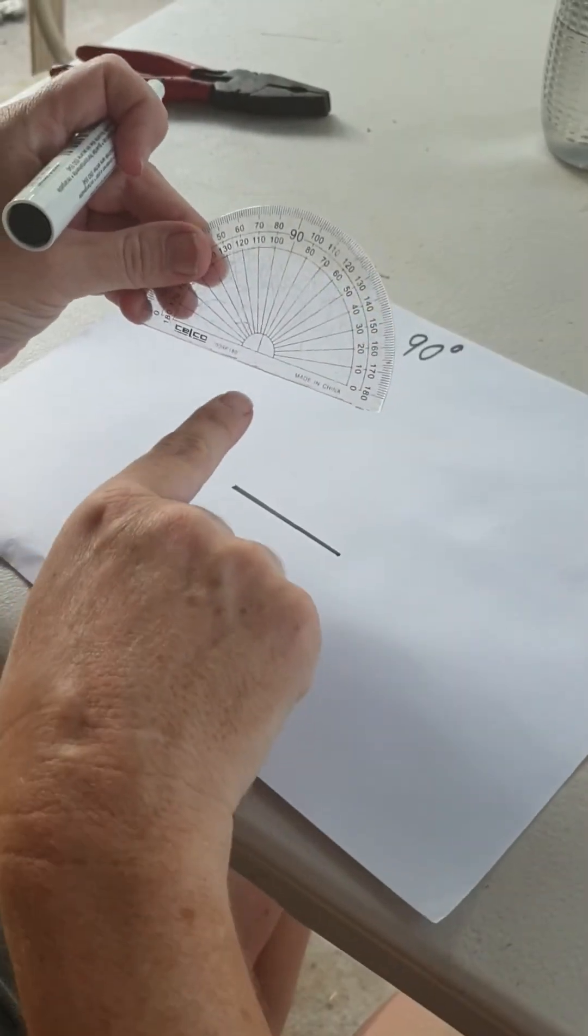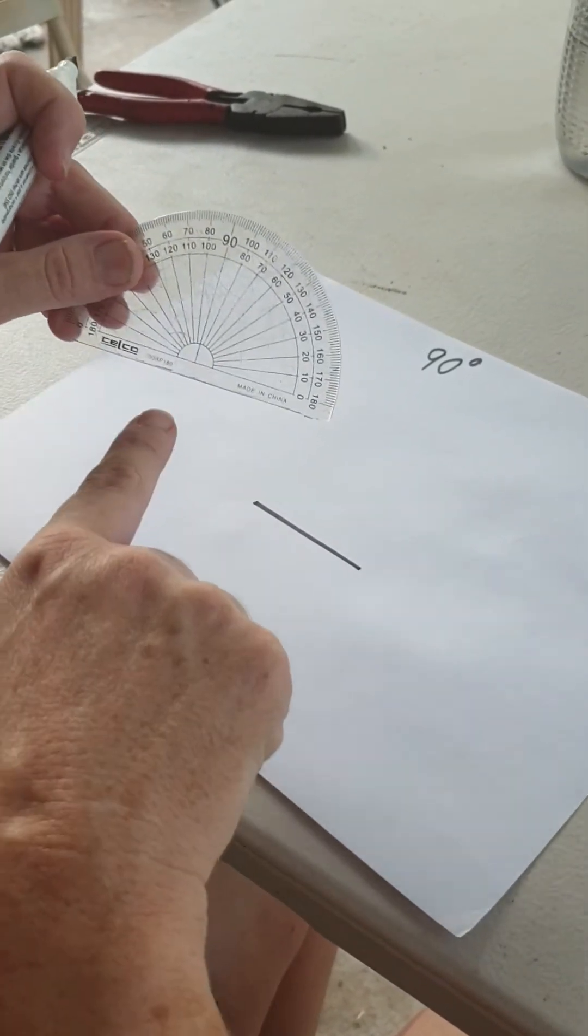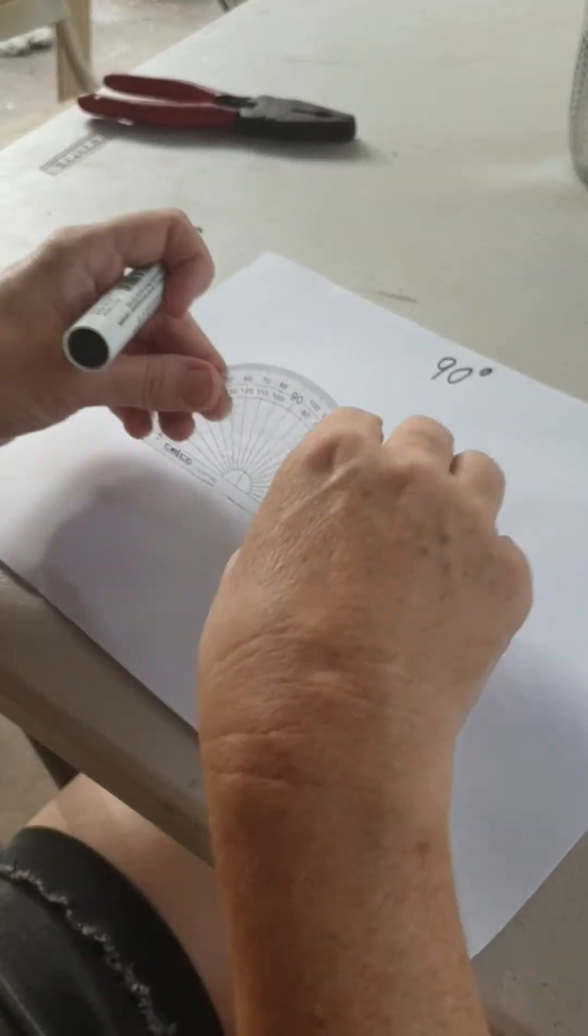Then you pick up your protractor and you need to put that end of the line in the corner of your protractor like this.